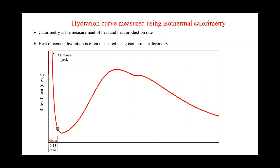The first stage is called the mixing stage. As soon as cement is mixed with water, the aluminate — which is very reactive — reacts very fast with water and starts to dissolve, due to which a high amount of heat is generated. That's why this first peak is observed.